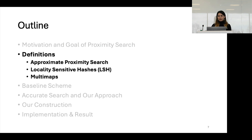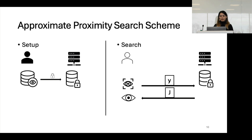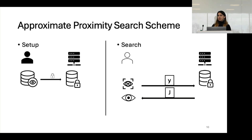Now let's look at some definitions needed for the rest of the talk. The first is the approximate proximity search scheme, which like other search schemes includes two algorithms: setup and search. During setup, a data owner who owns a biometric database encrypts it and sends it to the server.